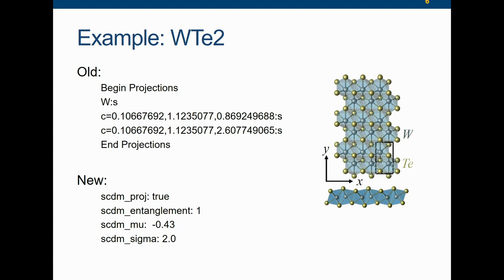In the end, he actually had to resort to the help of experts in Professor Mazzari's group, and he obtained this 'begin projections' block. What it does is to exactly put the localized orbitals on some bonds along some directions. If this is what you need, you can see that this is not very friendly for high-throughput calculations.